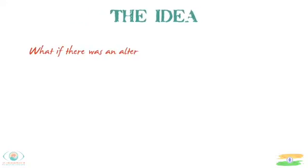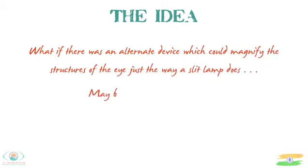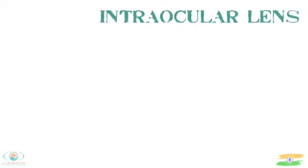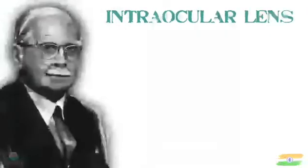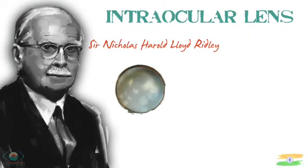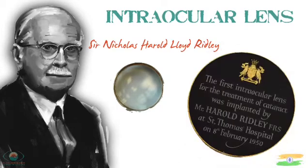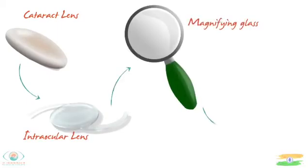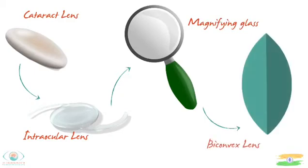So then the idea arose: what if there was a device that could magnify the structures of the eye without a slit lamp? Maybe a magnifying glass or an intraocular lens? Intraocular lens was invented by Sir Harold Ridley around 1950 for the treatment of cataract. All these years we have been doing cataract surgery and replacing it with an intraocular lens — it is nothing but a magnifying glass, a biconvex lens.